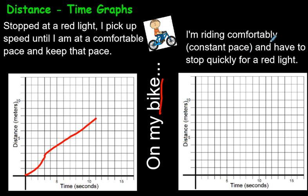Look at the next situation. I'm riding comfortably at a constant pace and have to stop quickly for a red light. So, riding comfortably. We'll assume... I don't know. We could start from a point of zero. Or if you're going towards the red light, if we call the red light the starting point, because this one started at the red light. Let's say you're riding comfortably towards the red light. You're riding comfortably. And all of a sudden, you have to stop at the red light.